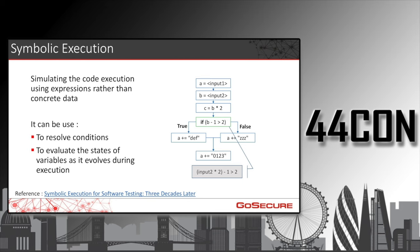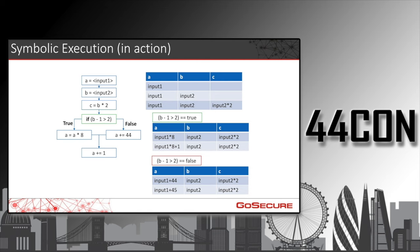Statically, here I have pseudocode on the right. The idea with symbolic execution is we're going to either try to resolve a condition or evaluate a state or variable at a specific moment. For example, in this specific code, we might want to test how we can reach the condition where it's true, so we transform the condition into an equation and try to solve it.